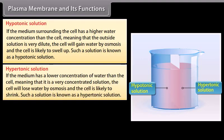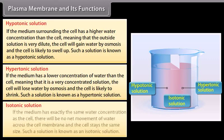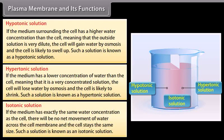If the medium has a lower concentration of water than the cell — meaning it is a very concentrated solution — the cell will lose water by osmosis and is likely to shrink. Such a solution is known as a hypertonic solution. If the medium has exactly the same water concentration as the cell, there will be no net movement of water across the cell membrane and the cell stays the same size. Such a solution is known as an isotonic solution.